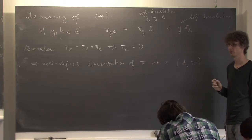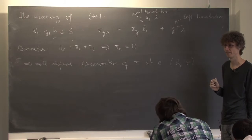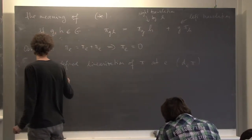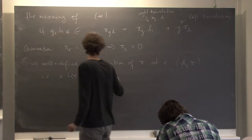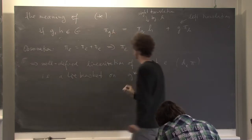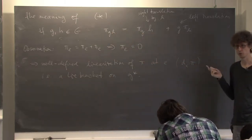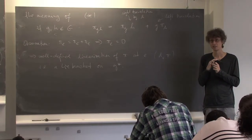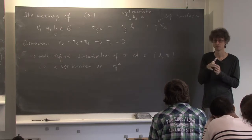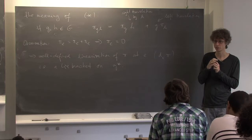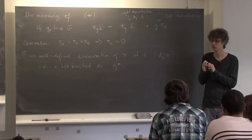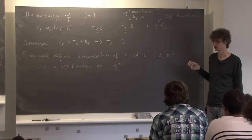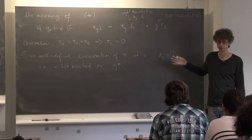So whenever we have a Poisson-Lie group, there is a Lie bracket on g (the Lie algebra of G) and also a Lie bracket on g* (from the linearization of π). They satisfy one more compatibility condition, giving what is called a Lie bialgebra. We shall see that Poisson-Lie group — at least when G is simply connected — is equivalent to a Lie bialgebra structure.